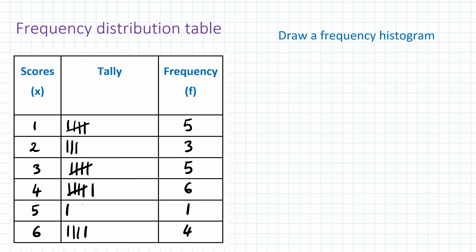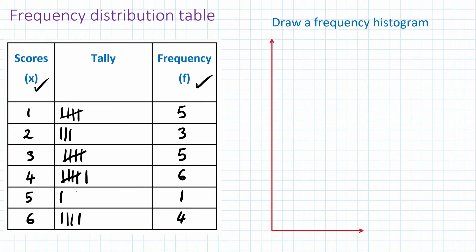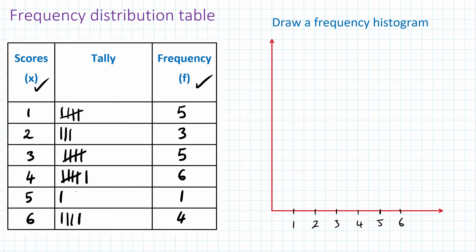Now we can construct a frequency histogram. To construct a frequency histogram we need scores and the frequency column. The horizontal axis is the score — the smallest is one and then up to six. The maximum frequency is six, so I'll make the scale a bit bigger: one, two, three, four, five, six, and seven.